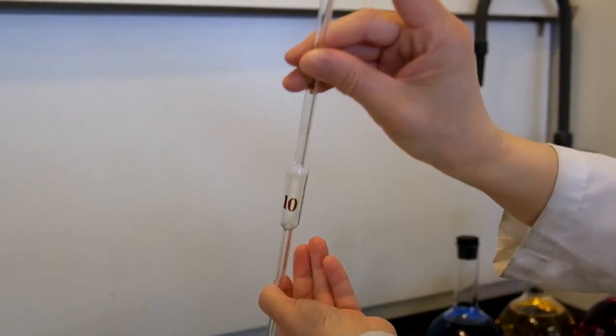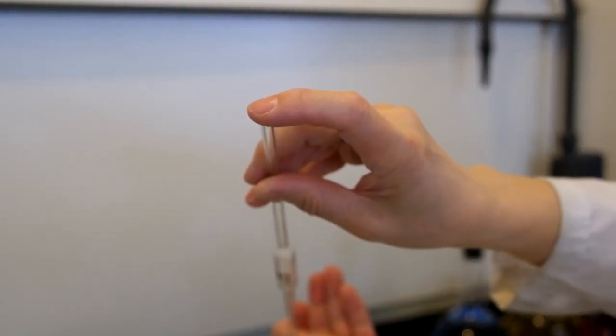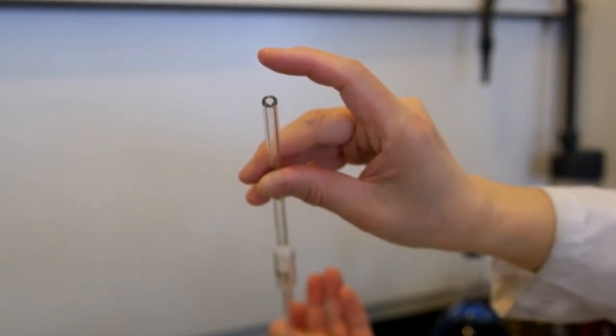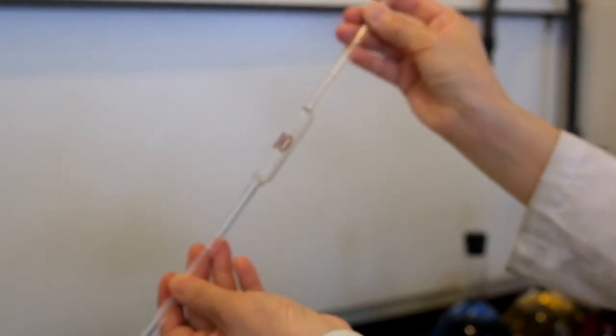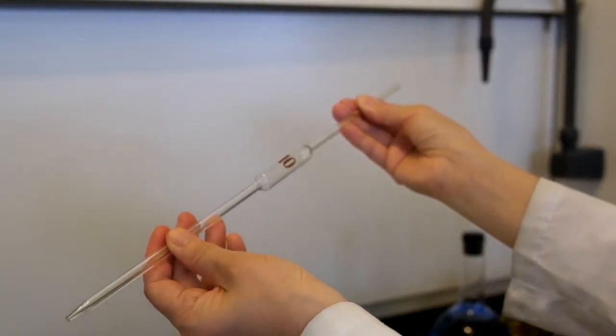First, we inspect the pipette to make sure that the tip is not chipped and the top end of the pipette is smooth and flat. If the top end of the pipette is chipped or not smooth, it is very difficult to pipette.